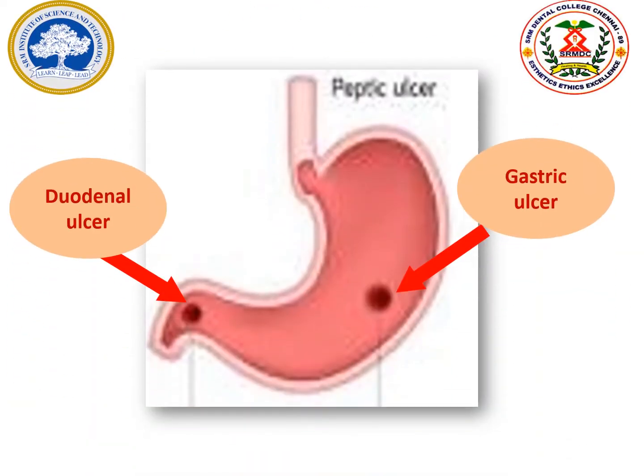Before we see the role of proton pump inhibitors in the treatment of peptic ulcer diseases, first we will see what peptic ulcer diseases are. Peptic ulcer disease occurs mainly due to the imbalance between the offensive and defensive factors, leading to erosion of the gastric mucosal layer and symptoms like abdominal pain, discomfort, nausea, and vomiting. One causative factor is Helicobacter pylori, a gram-negative bacteria.